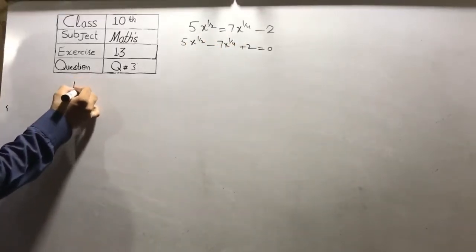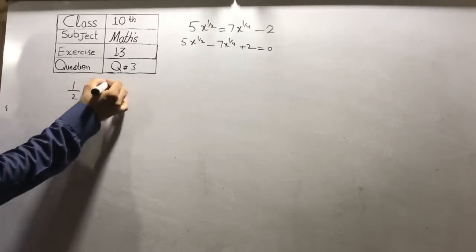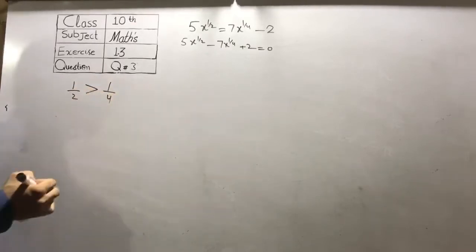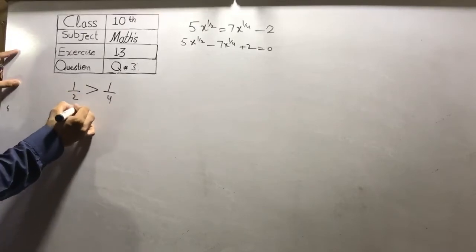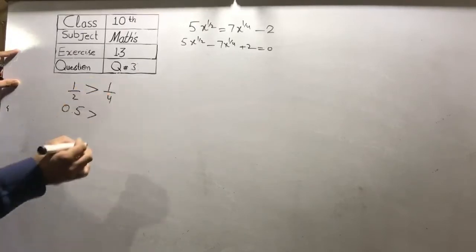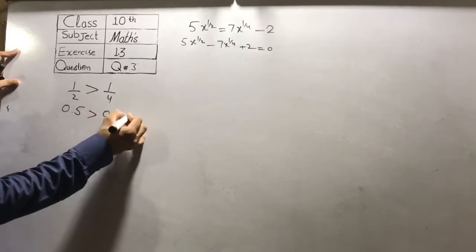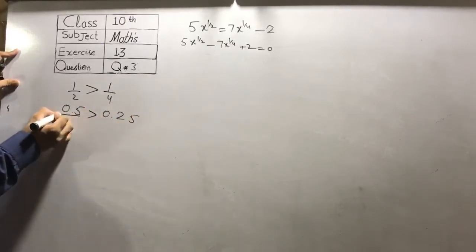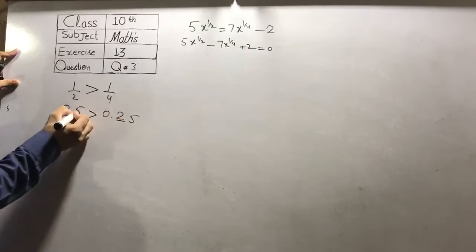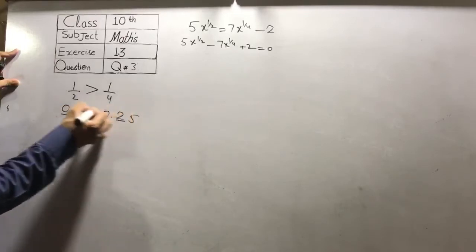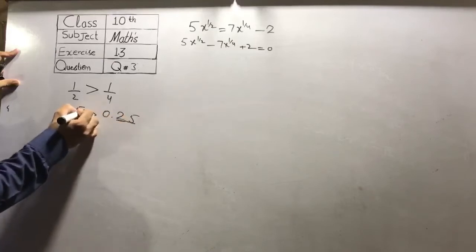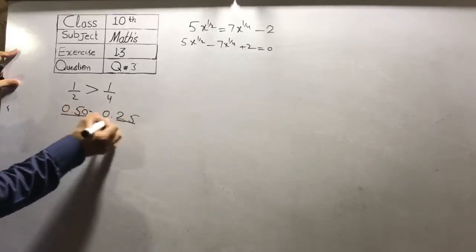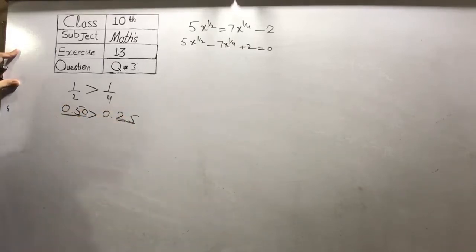1 over 2 is greater and 1 over 4 is smaller. 1 over 2 is equal to 0.5 and 1 over 4 is equal to 0.25. So 1 over 4 is the lesser exponent and 1 over 2 is the greater exponent.